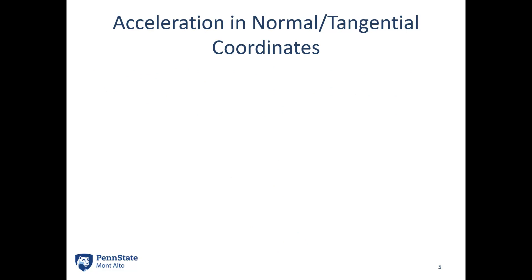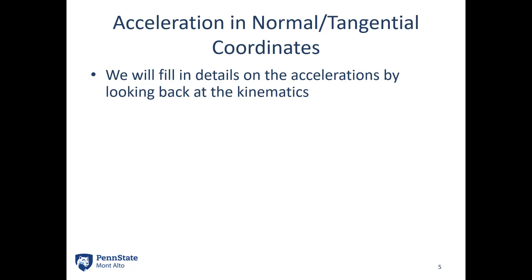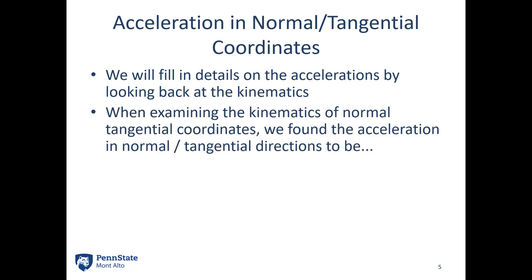For the acceleration part, we're going to fill in details in acceleration by looking back to kinematics. When we dealt with this in kinematics, we found the acceleration in the normal direction to be the current speed times theta dot, or speed squared over the radius of curvature of the path we're following. The acceleration in the tangential direction is v dot, the rate at which the speed of the object is changing. This v does not include the direction of our velocity — it is just a magnitude. We can plug these various pieces into the acceleration part of our equation.